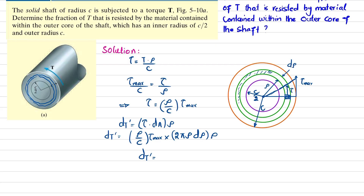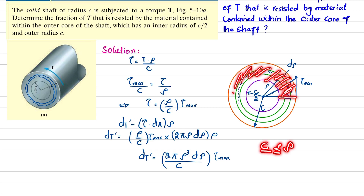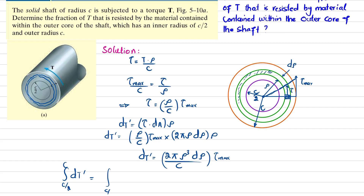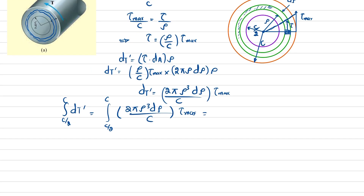To find the torque resisted by the outer core, ρ ranges from c/2 to c. Integrating both sides, T' = ∫ from c/2 to c of (2π·τ_max / c)·ρ³ dρ. Since τ_max and 2π/c are constants, we are left with the integral of ρ³ dρ from c/2 to c.